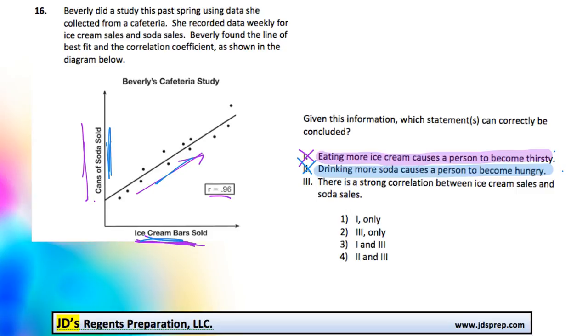And so, that only leaves us with option number three. There's a strong correlation between ice cream sales and soda sales. And we know that's true because look at the correlation coefficient. It's 0.96. When it's that close to positive one, that means there is a strong correlation.